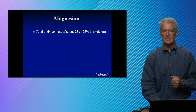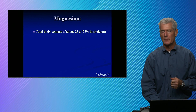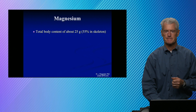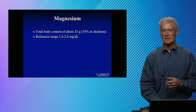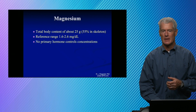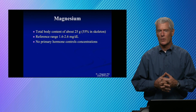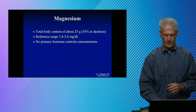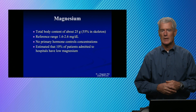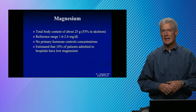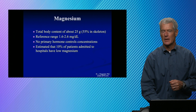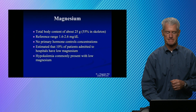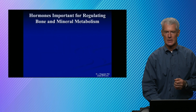Magnesium is another important component of skeletal structure. The reference range is 1.6 to 2.6 milligrams per deciliter, and there really aren't any direct hormonal controls for magnesium. Oftentimes we measure it in the setting of hypocalcemia, because if a patient is hypocalcemic, they are oftentimes hypomagnesemic as well, and it's easily treatable.